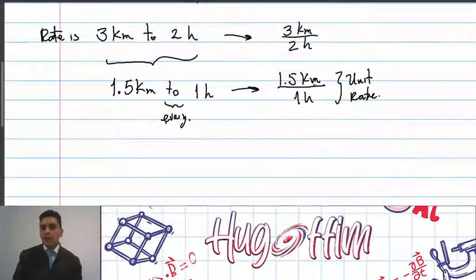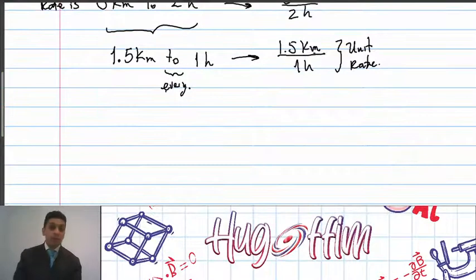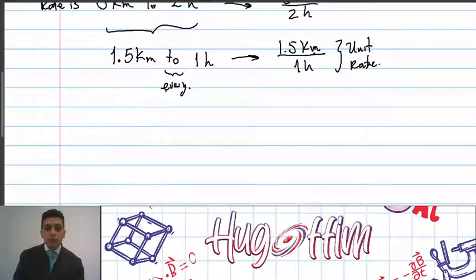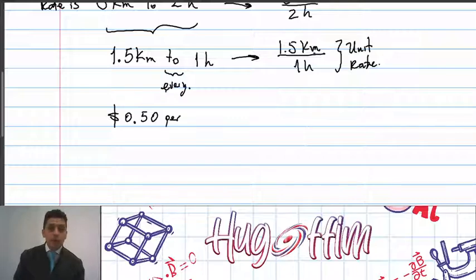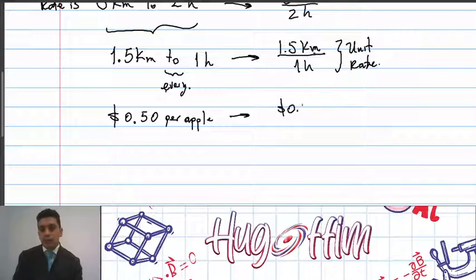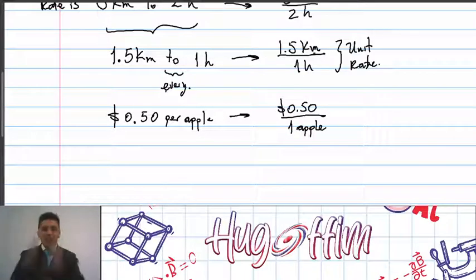The unit price is a rate where the unit is items — the cost per item. For example, if you go to the market and ask for an apple, and the seller tells you the apple costs one dollar fifty per apple, you can write that as $1.50 over one apple. That is what we call the unit price.